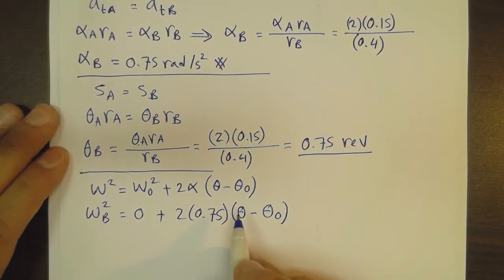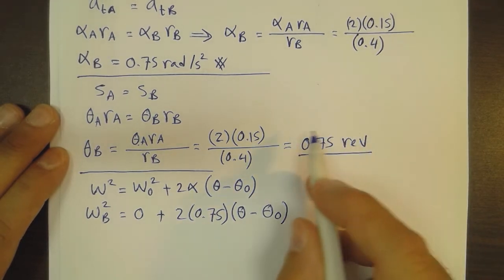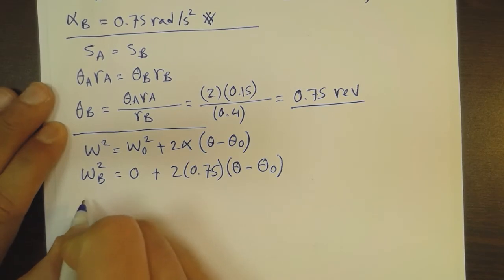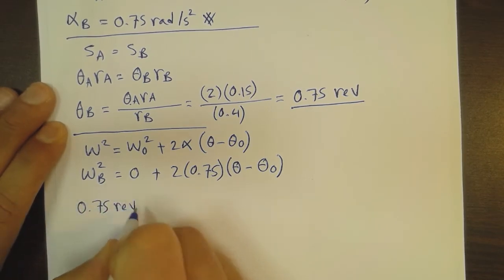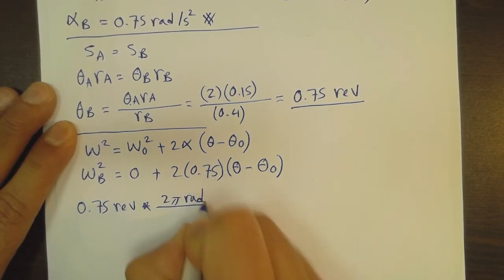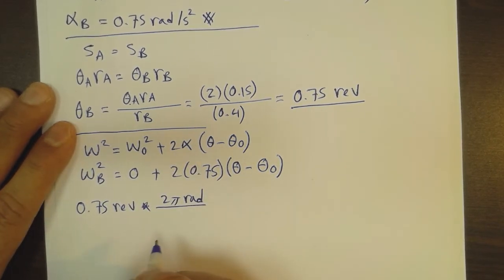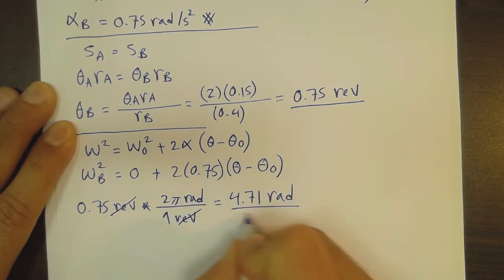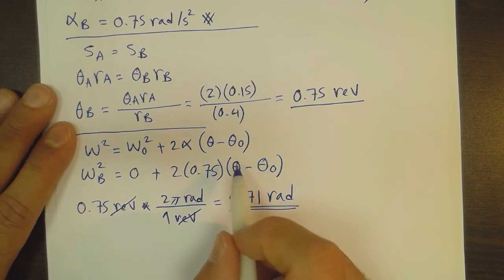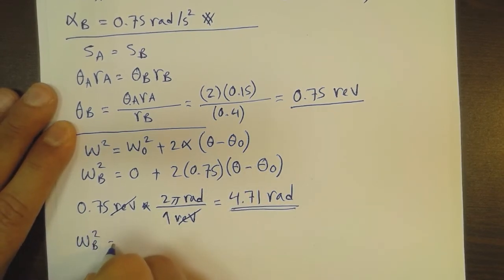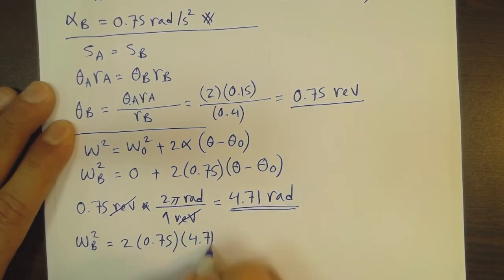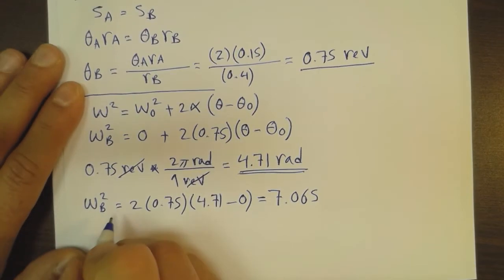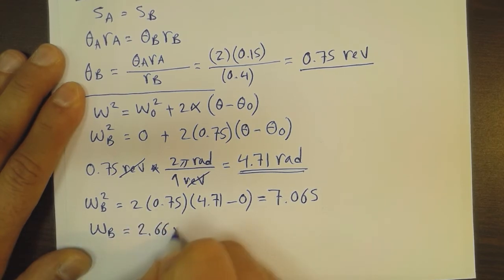Things should preferably be in radians, so we convert the angular displacement of wheel B: 0.75 revolutions times 2π over 1 revolution gives us 4.71 radians. Substituting into the equation: omega_B squared equals 2 times 0.75 times 4.71 minus 0, which gives 7.065. Therefore omega_B equals 2.66 radians per second. This is the angular velocity of wheel B.